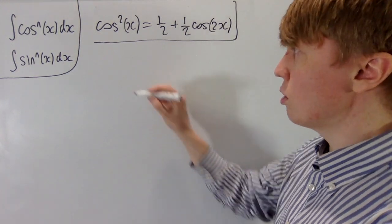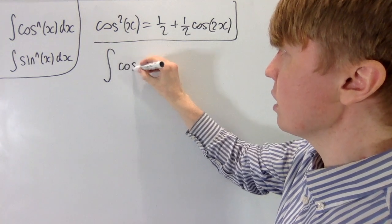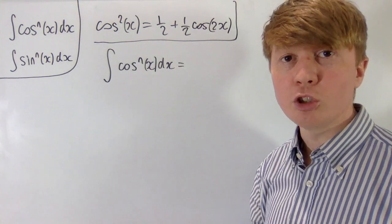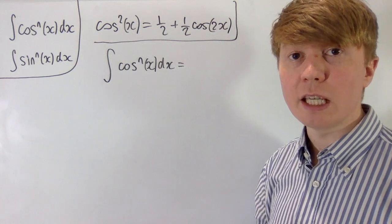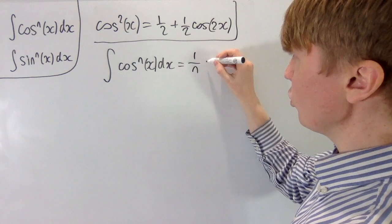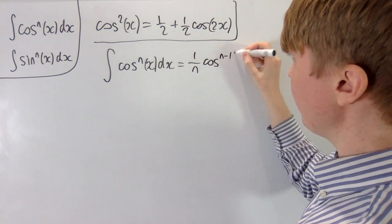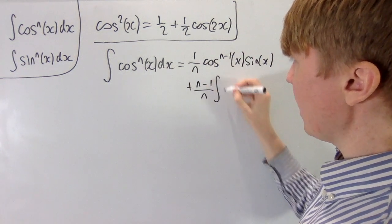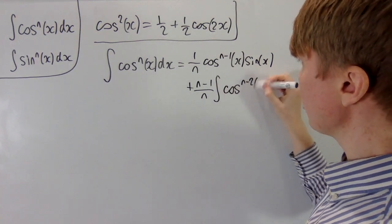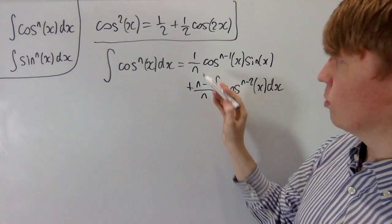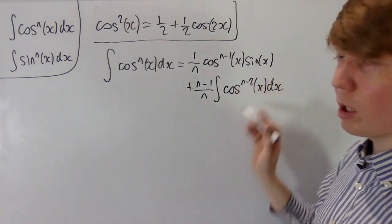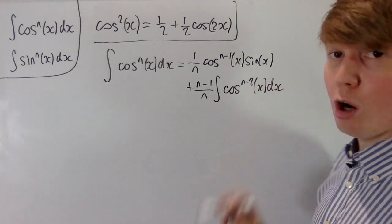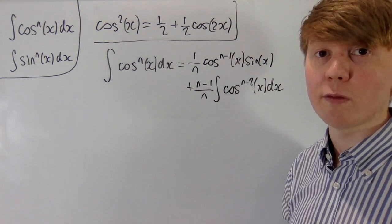Another really nice approach is to use integration by parts. If we're interested in integrating cos^n(x) with respect to x, we take u as cos^(n-1)(x) and dv/dx as cos(x). You can write this as (1/n)·cos^(n-1)(x)·sin(x) plus (n-1)/n multiplied by the integral of cos^(n-2)(x) dx. This is useful because we have something we can evaluate plus an integral where the power is now n−2, so we've reduced the power, and we can apply the same procedure repeatedly until the power is small enough to evaluate.